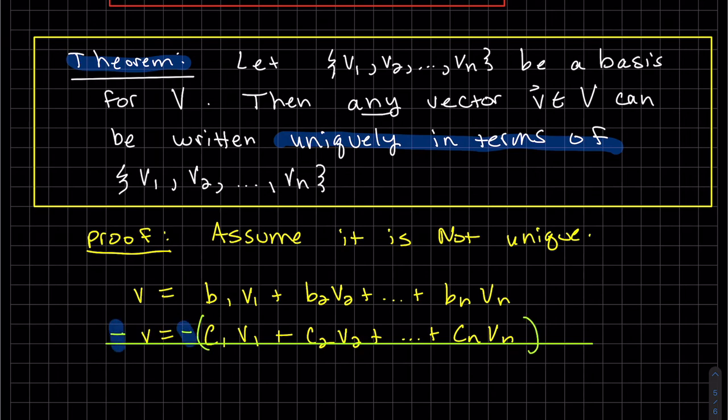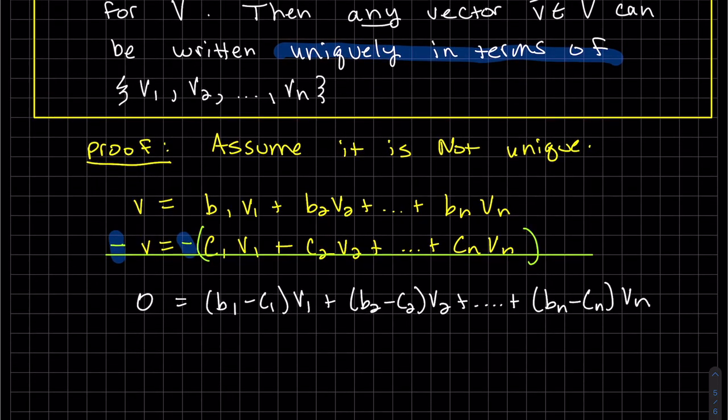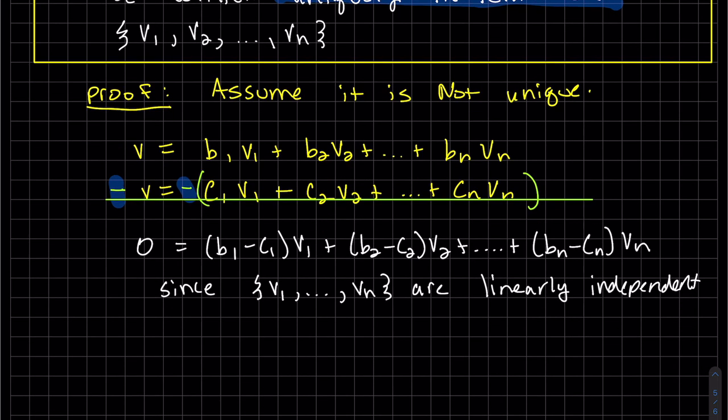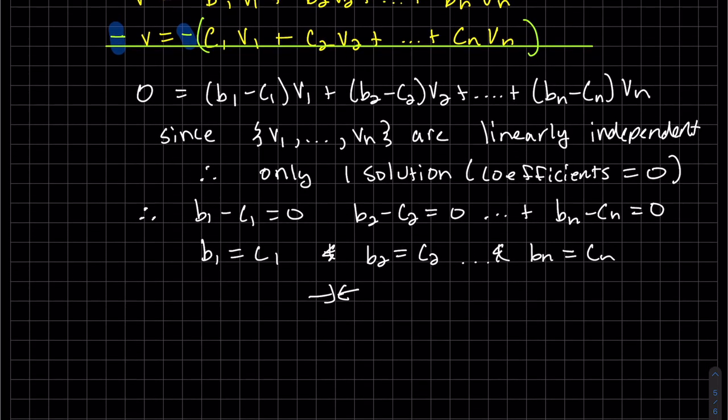So V minus V on the left, we get 0. And then we subtract term by term, B1 minus C1, V1. Well, now we have this linear combination equaling to 0. And since we know the vectors are linearly independent, then there exists only one solution that the coefficients are equal to 0. Each of them are 0. So let's write that out. And clearly, we just get our contradiction. Which means they are unique.